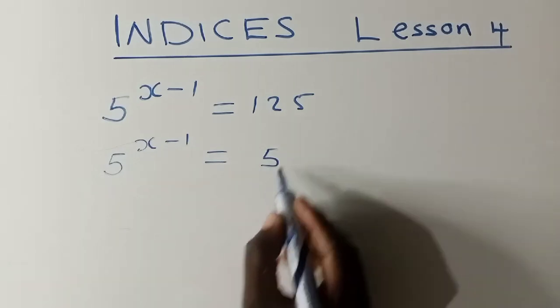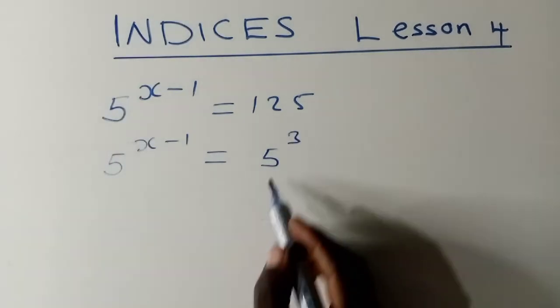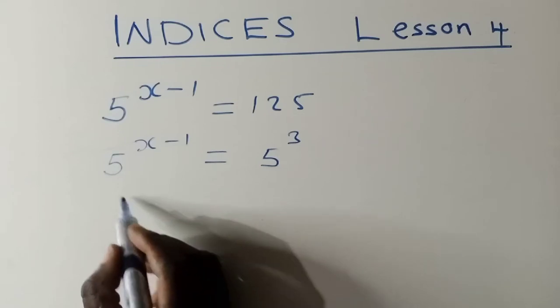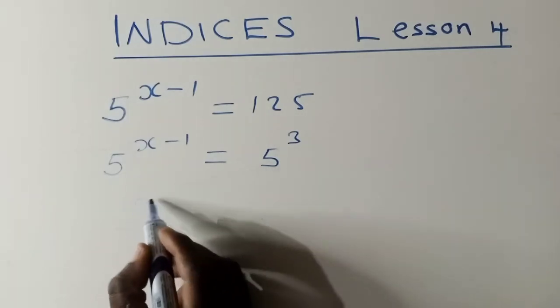This can be balanced. This will be 5 to the power of 3, okay? If you say 5 to the power of 3, it will give you 125. Since the bases are the same, get the powers.